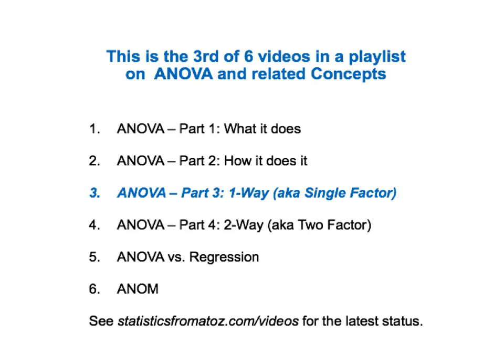And finally, there is a video on ANOM — Analysis of Means. ANOVA can tell you whether there is a statistically significant difference among the means of several groups, but it can't tell you which means are different. ANOM can do that. Depending on when you are viewing this, videos four through six may not be available yet. To get the latest status, see the videos page on the book's website.